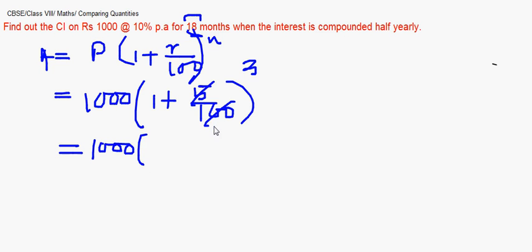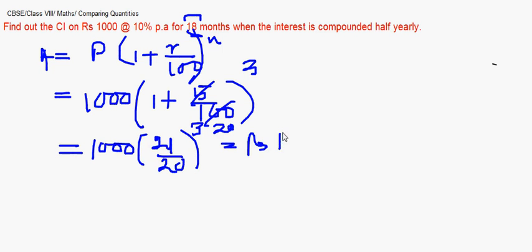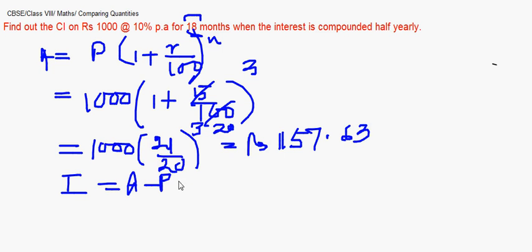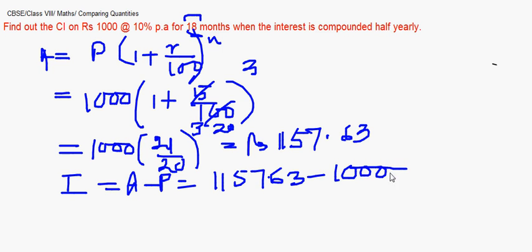This reduces to 21/20 to the power 3. Solving the arithmetic gives an amount of 1,157.63. The interest is amount minus principal: 1,157.63 minus 1,000 equals 157.63 rupees. This is how you work it out when it is compounded half yearly.